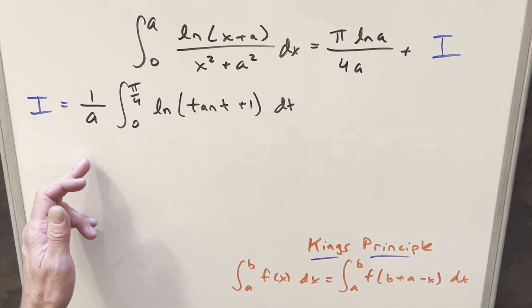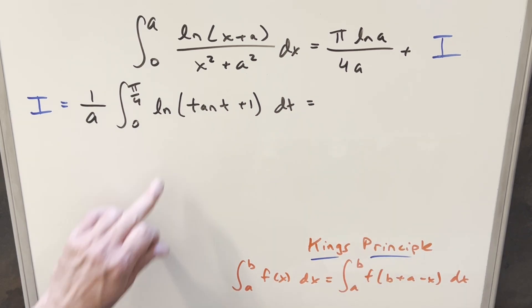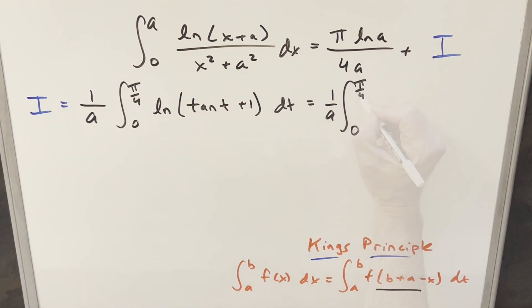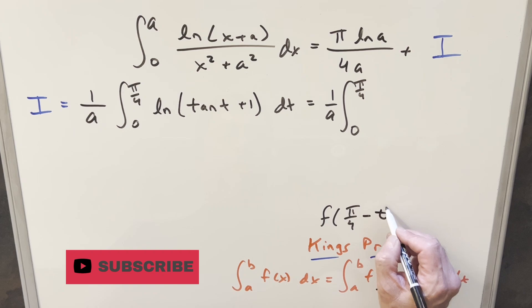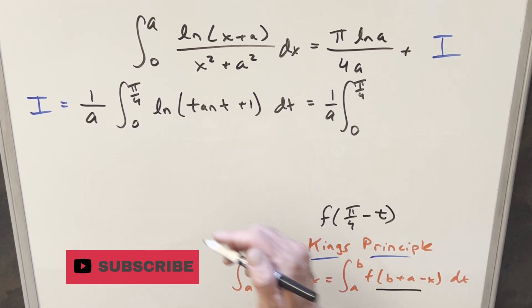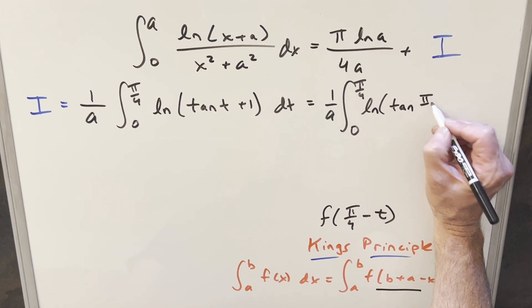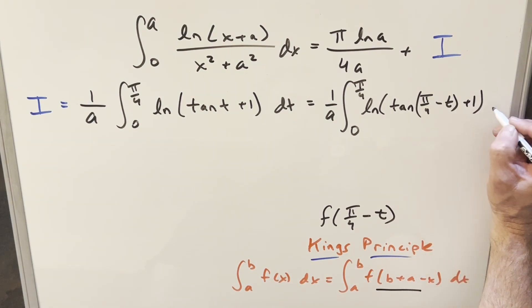Okay, now focusing on this integral over here, what I'm going to do to rearrange this is use King's principle on this, which is going to allow us to rewrite it, but then we're going to change our input here. So we're going to keep this 1 over A in front, and our bounds stay the same. For this f of B plus A minus x value, we need to add the bounds. When you do that, it's going to be f of pi over 4 minus t in this case. So we'll plug this in for t, we're going to have natural log tan of pi over 4 minus t plus 1 dt.